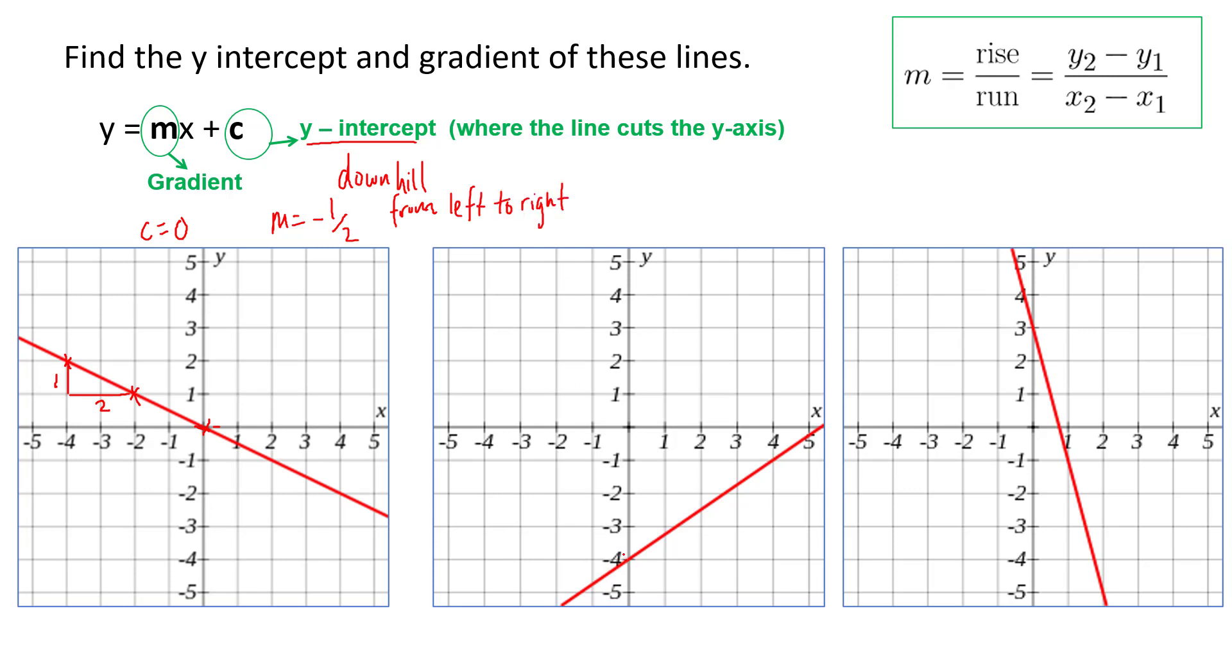So let's see, where does this cross the y axis. This is the y axis because it crosses, that's the y coordinate. So c here equals minus four.